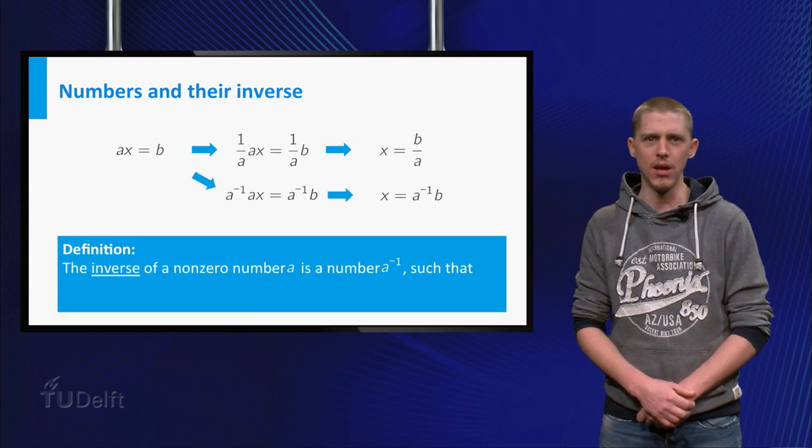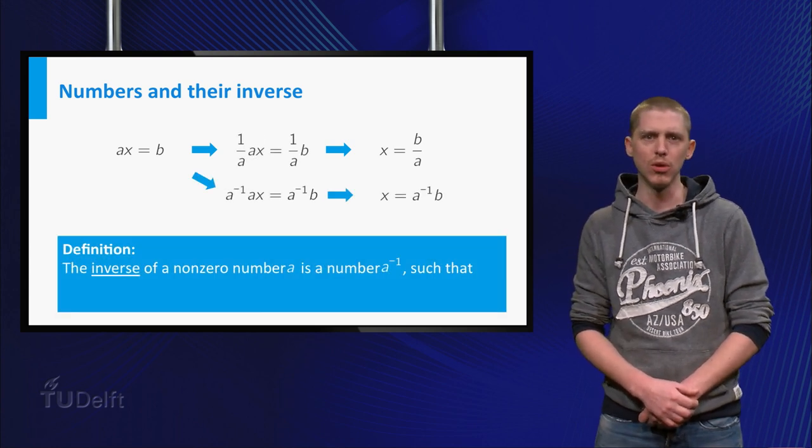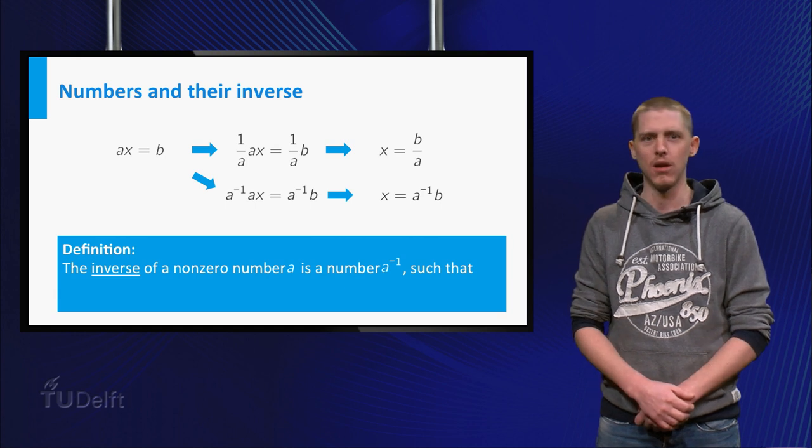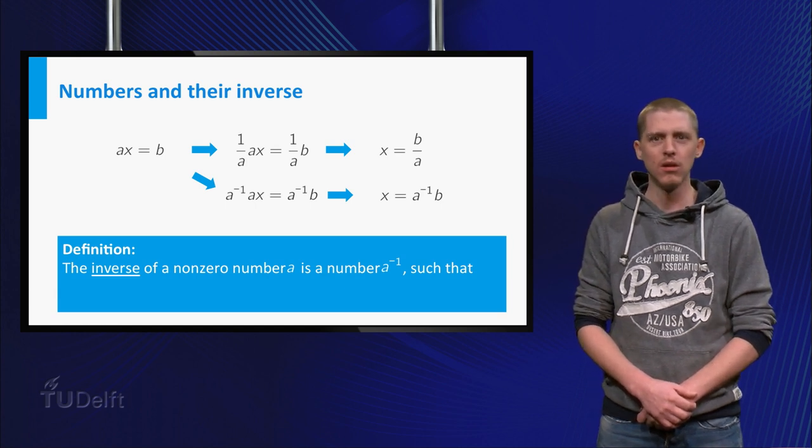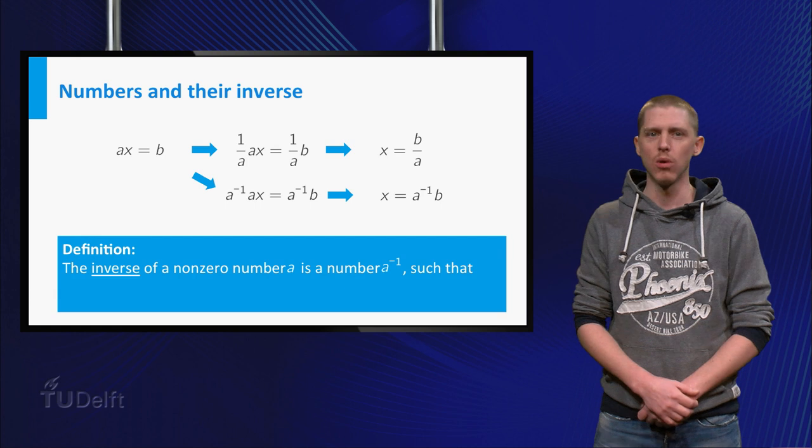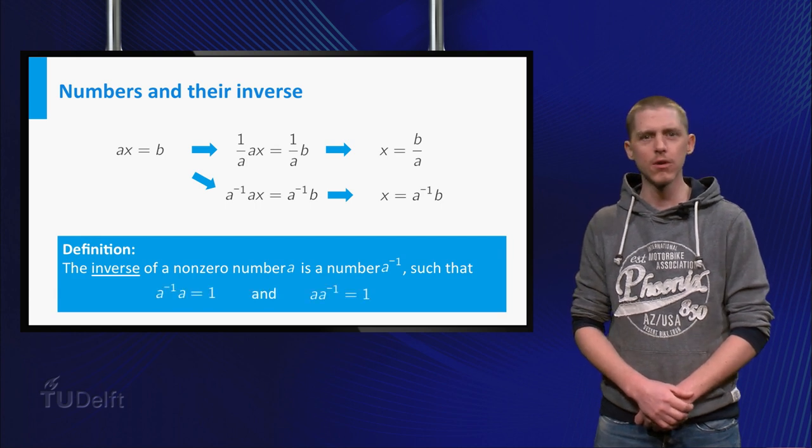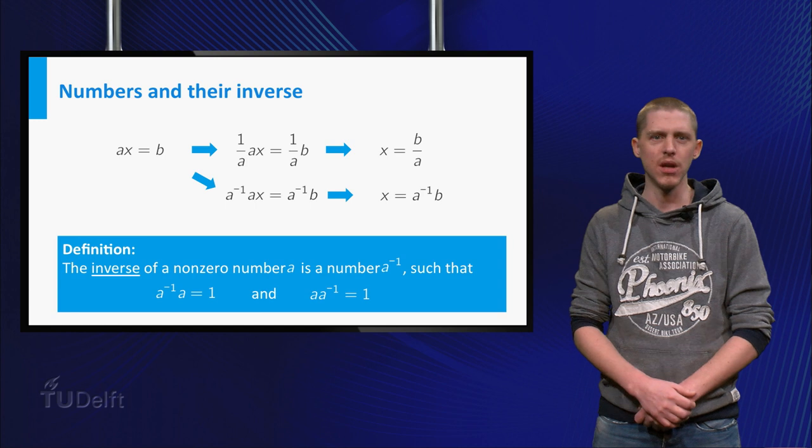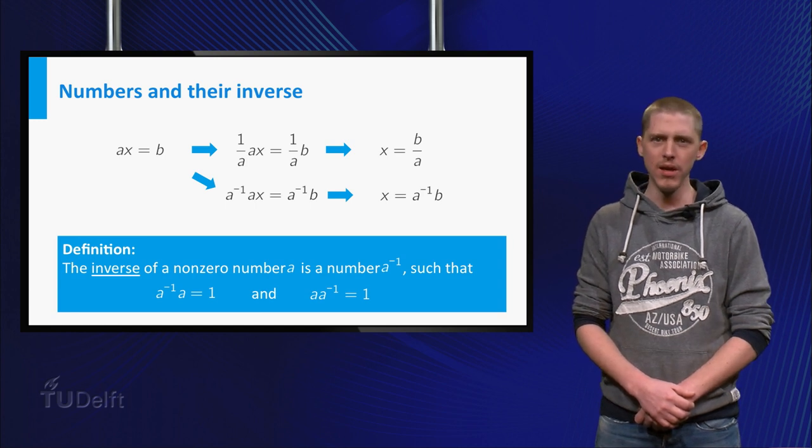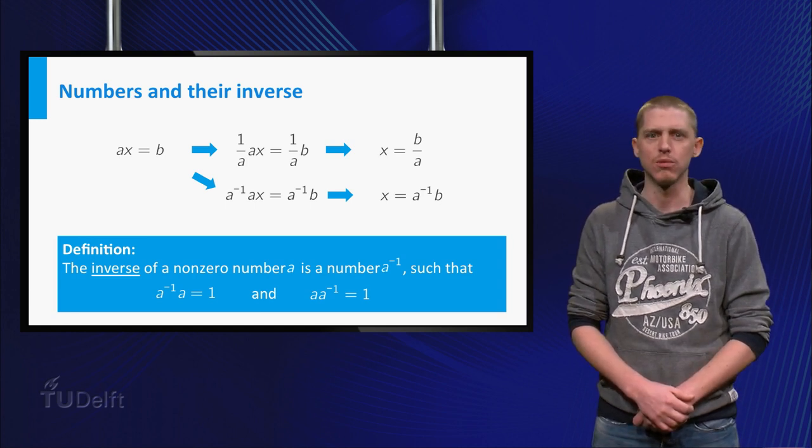You can also see division by A as multiplication with the multiplicative inverse of A, which is 1 over A or A to the power minus 1. The inverse has the properties 1 over A times A equals 1 and A times 1 over A equals 1.